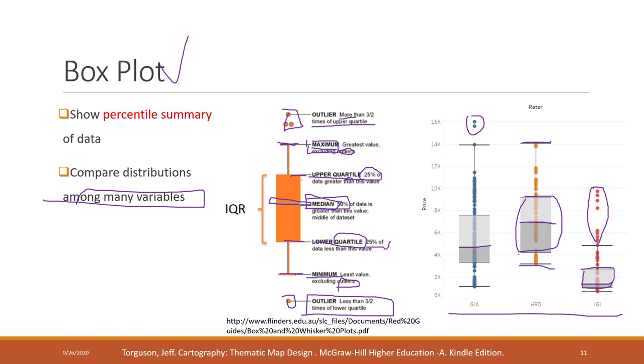So that is what we can tell from a box plot — it is used to compare the distribution among many variables.